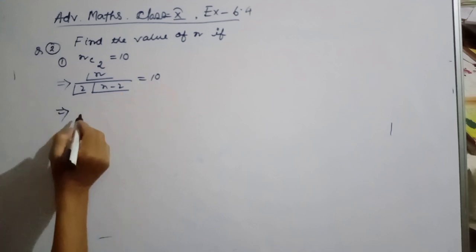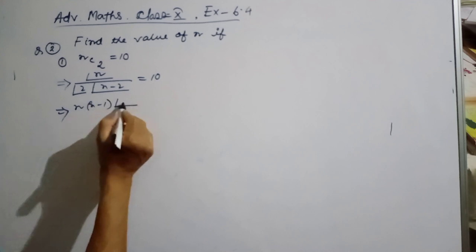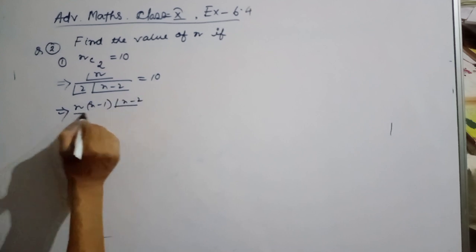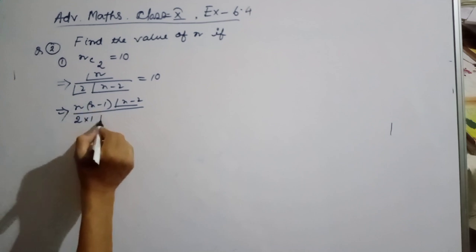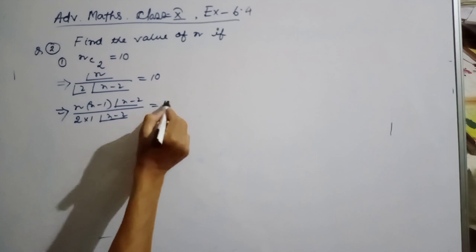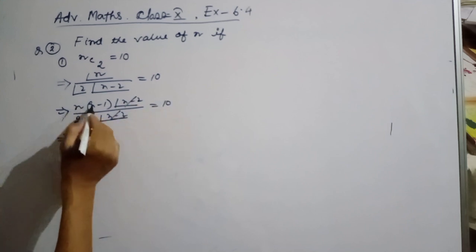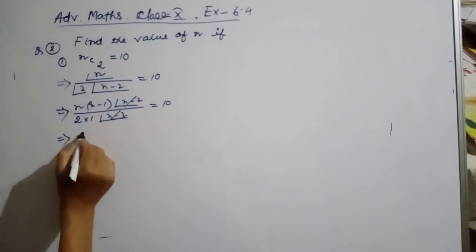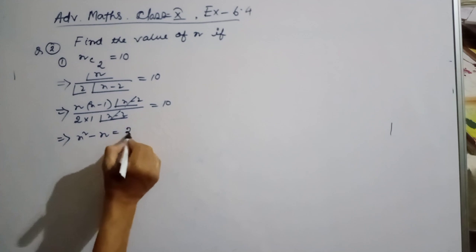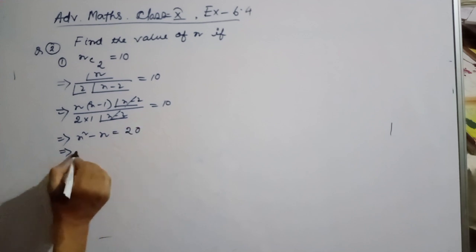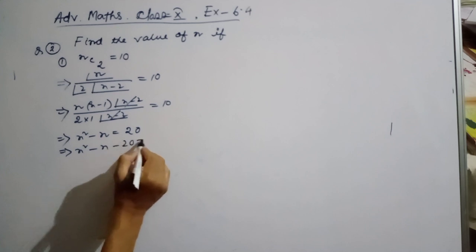nC2 is equal to 10. Applying the formula, nC2 equals n(n-1)/2, so n(n-1)/2 = 10, which gives n squared minus n equal to 20.